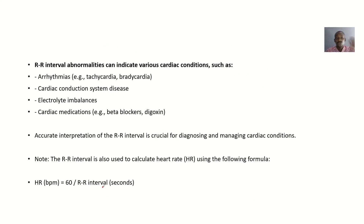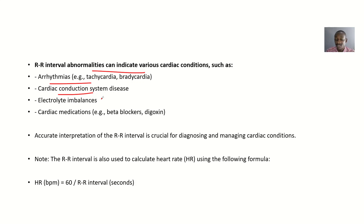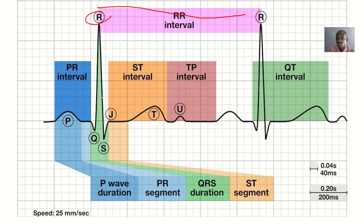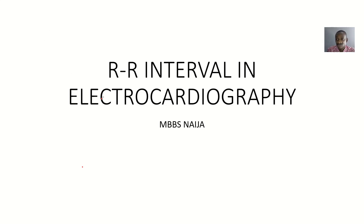R-R interval abnormalities can be associated with various cardiac conditions, such as arrhythmias — either tachycardia or bradycardia — cardiac conduction system disease, electrolyte imbalance, or cardiac medications. Drugs like beta blockers and digoxin basically result in abnormalities in R-R intervals on ECG.